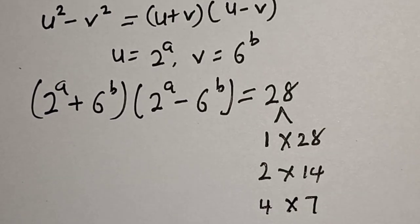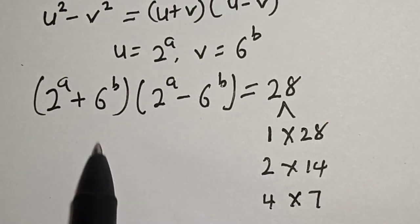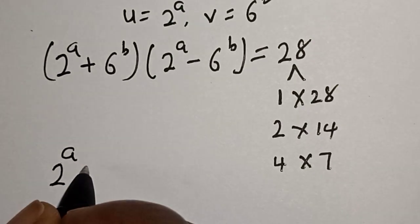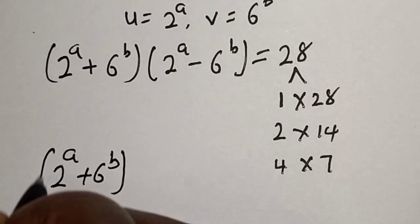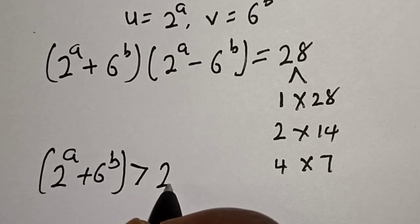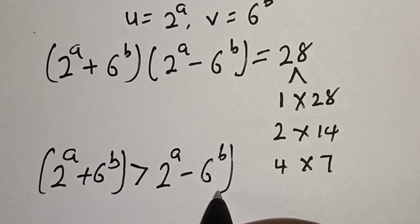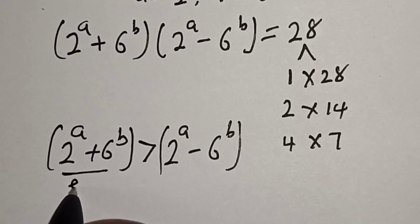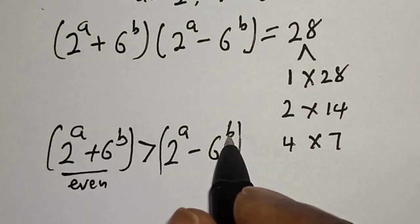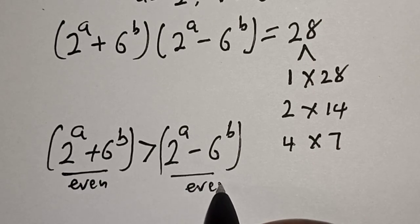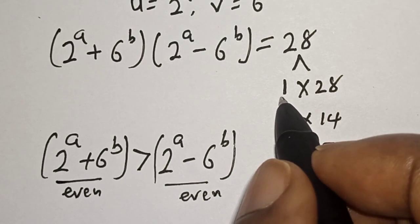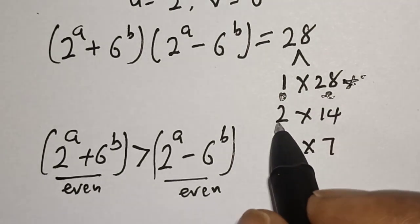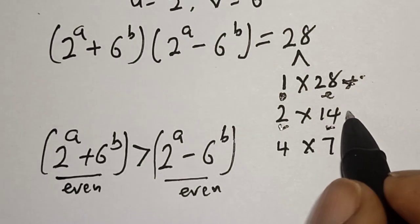And 4 multiplied by 7. From here we have 2 to the power of a plus 6 to the power of b, and 2 to the power of a minus 6 to the power of b. That means 2 to the power of a plus 6 to the power of b is greater than 2 to the power of a minus 6 to the power of b. Now if you check, 2 to the power of a plus 6 to the power of b is even. So we are looking for even numbers. 1 is odd and 28 is even — rejected. 2 is even and 14 is even — accepted. 4 is even and 7 is odd — rejected.